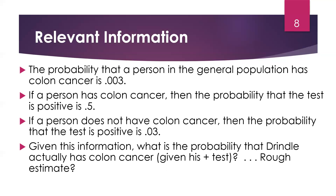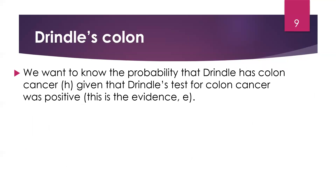Given all that information, what's the probability that Grenault actually has colon cancer? When a survey of physicians was given information like this, many of them just took the 0.5 and subtracted the 0.03, coming up with 0.47 — that was the most common answer. So they were saying a positive test gives roughly a 50-50 chance that the person has colon cancer. That's pretty bad news if you test positive. But let's use Bayes' theorem to be much more careful with this.